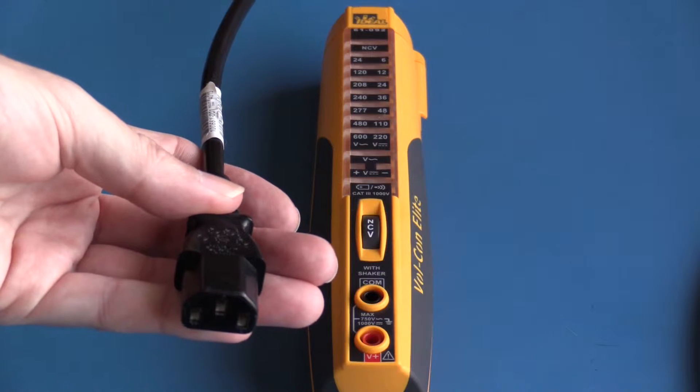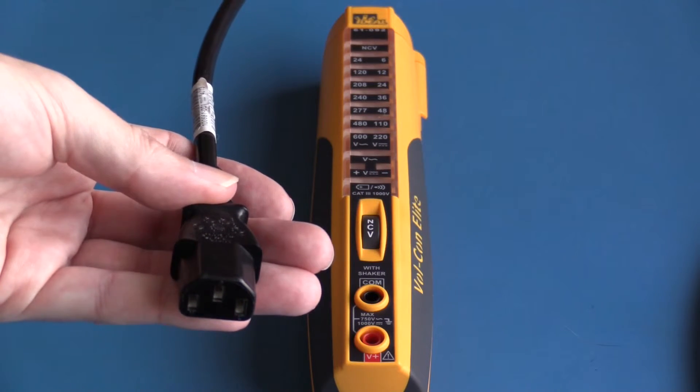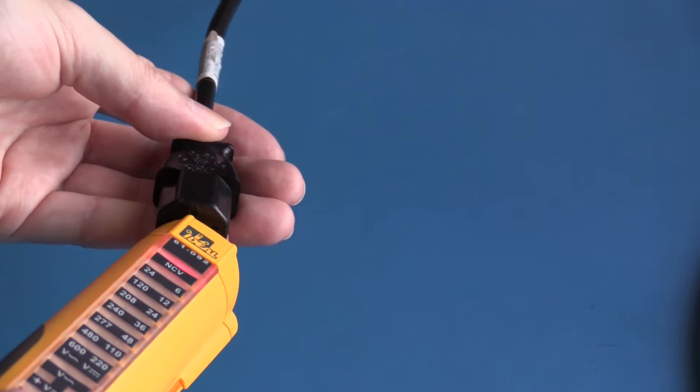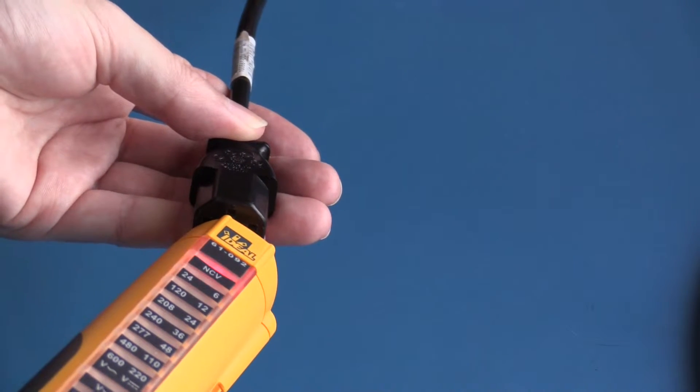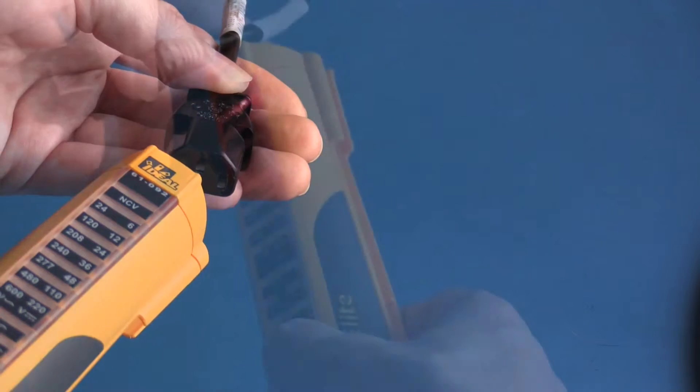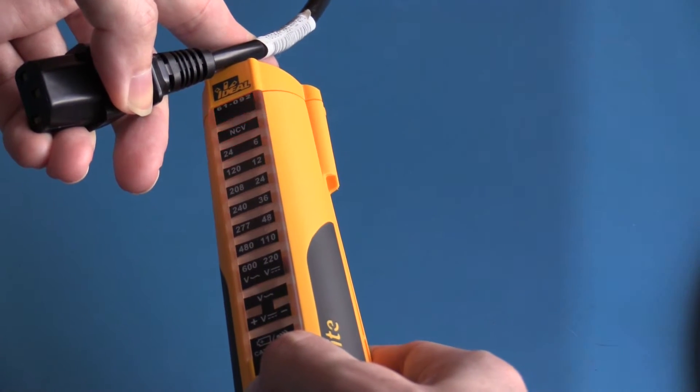This is a fairly typical 10 amp power cord. We're going to do a non-contact voltage test. This is testing live and indicating that voltage is present. We get no reading at all with neutral and testing the cable itself.